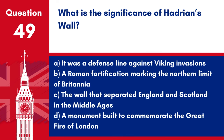Question 49. What is the significance of Hadrian's Wall? A. It was a defence line against Viking invasions. B. A Roman fortification, marking the northern limit of Britannia. C. The war that separated England and Scotland in the Middle Ages. D. A monument built to commemorate the Great Fire of London. Answer: B. A Roman fortification, marking the northern limit of Britannia. Hadrian's Wall was significant as a defensive fortification built by the Romans in northern England.